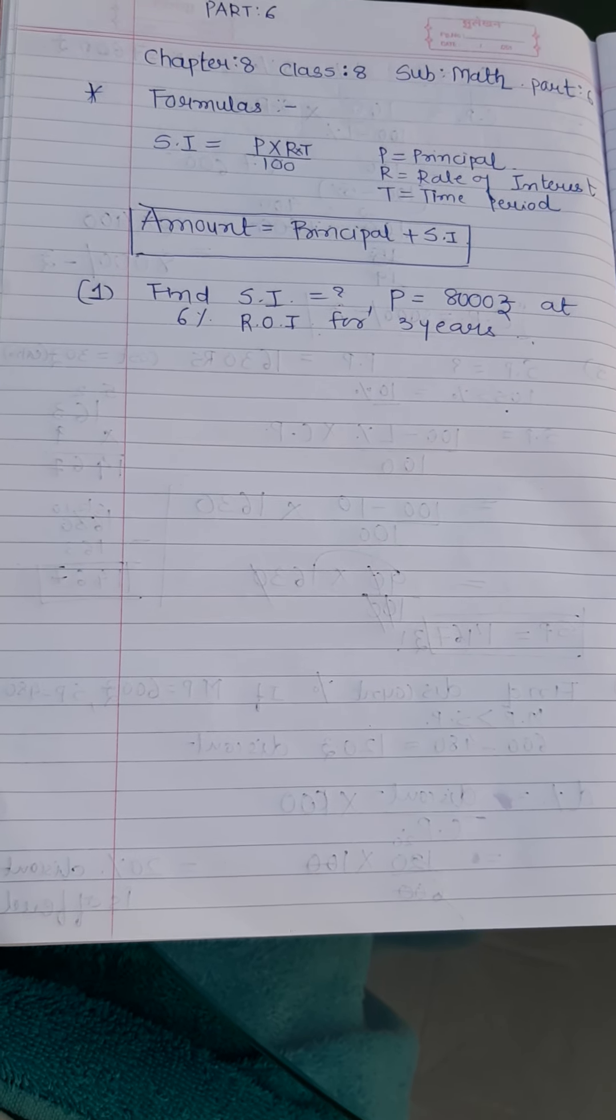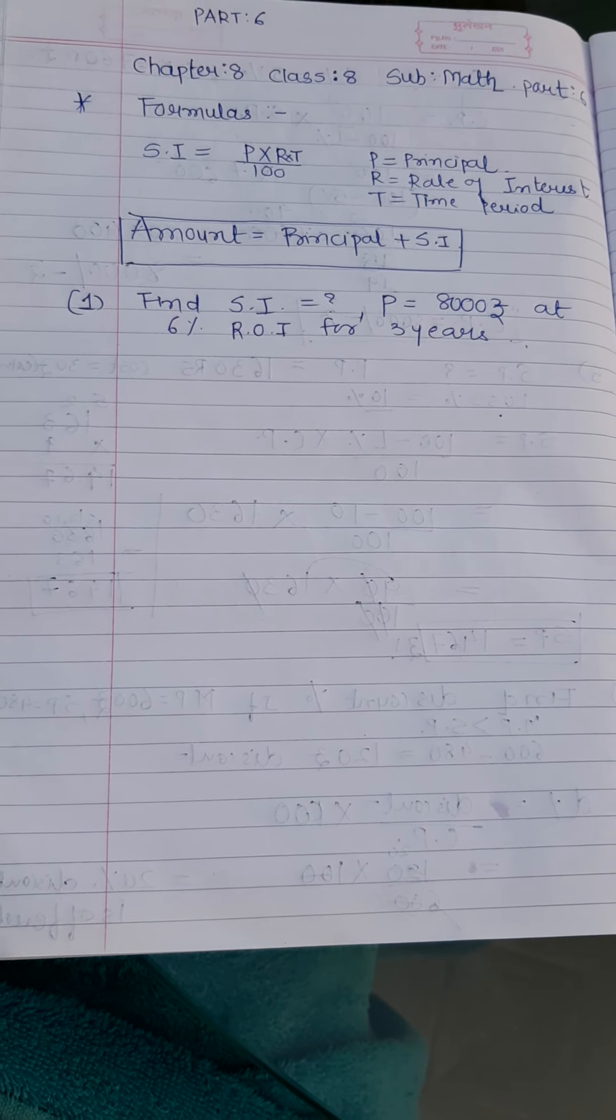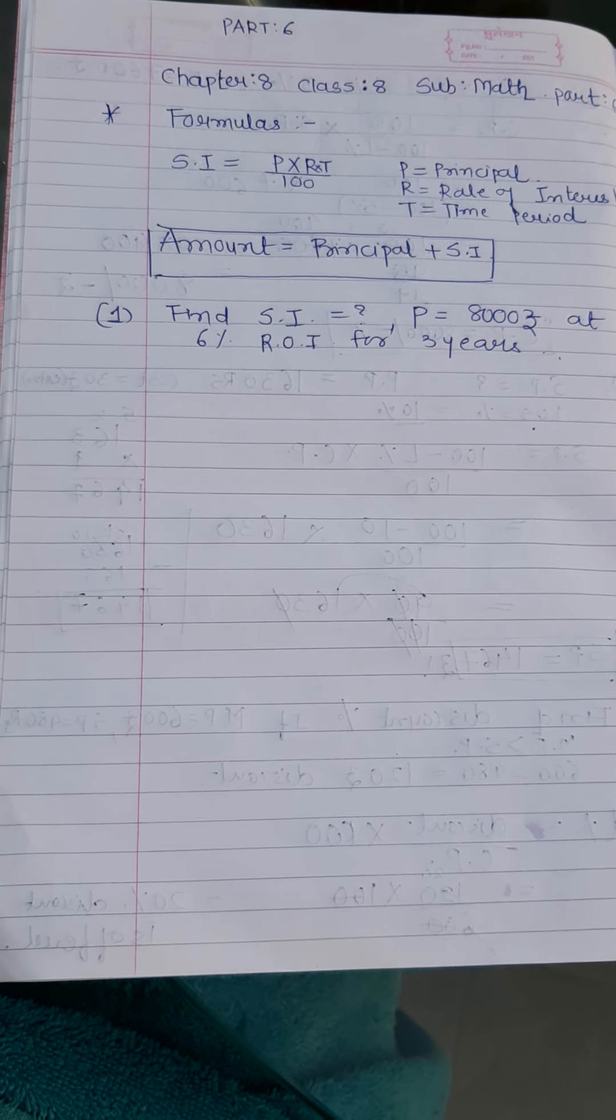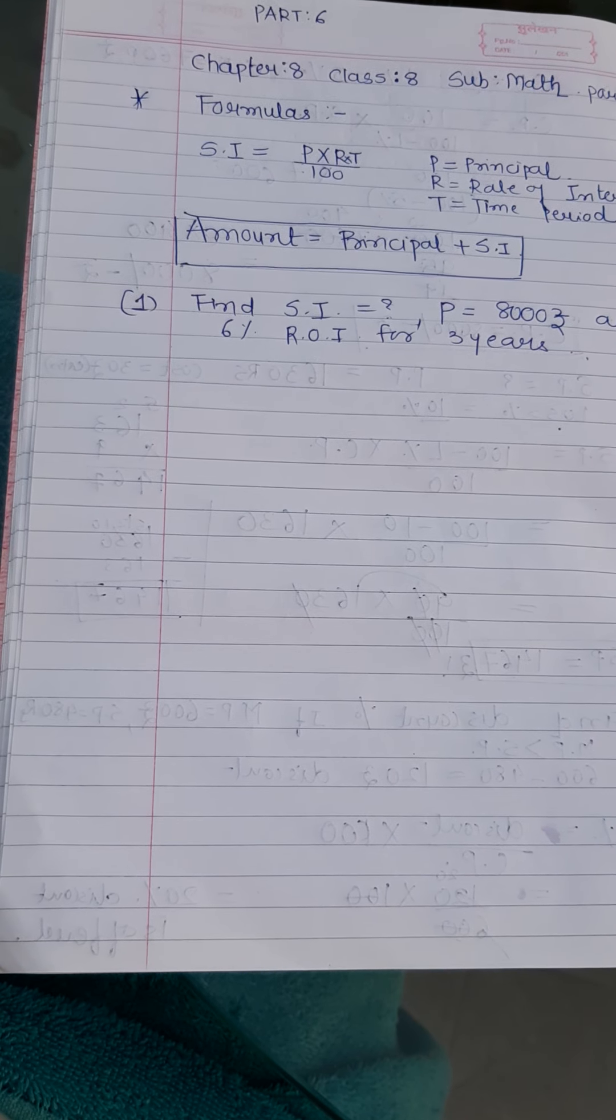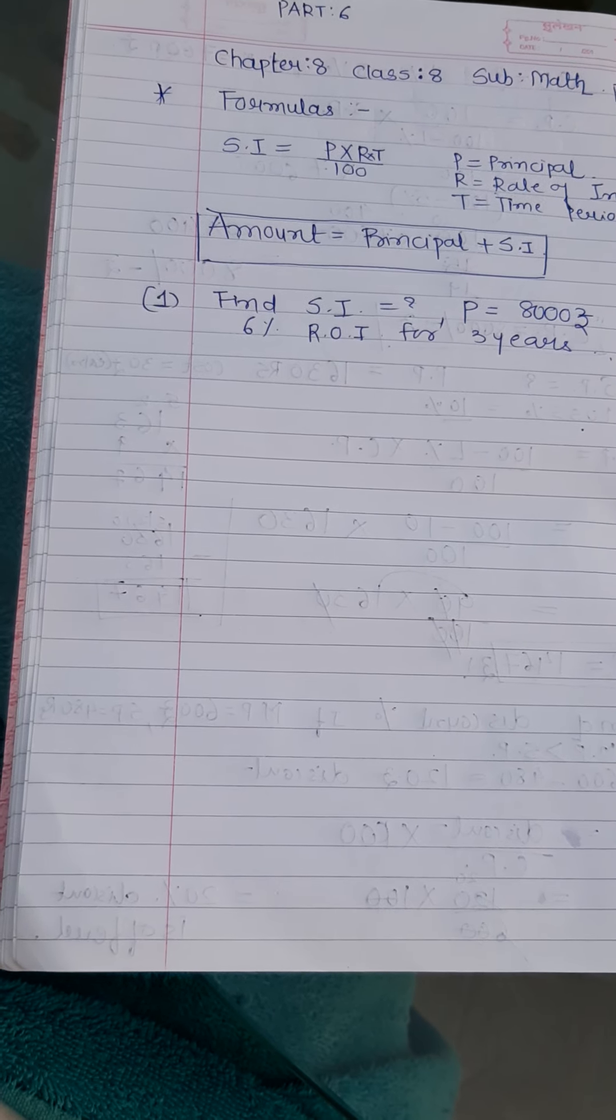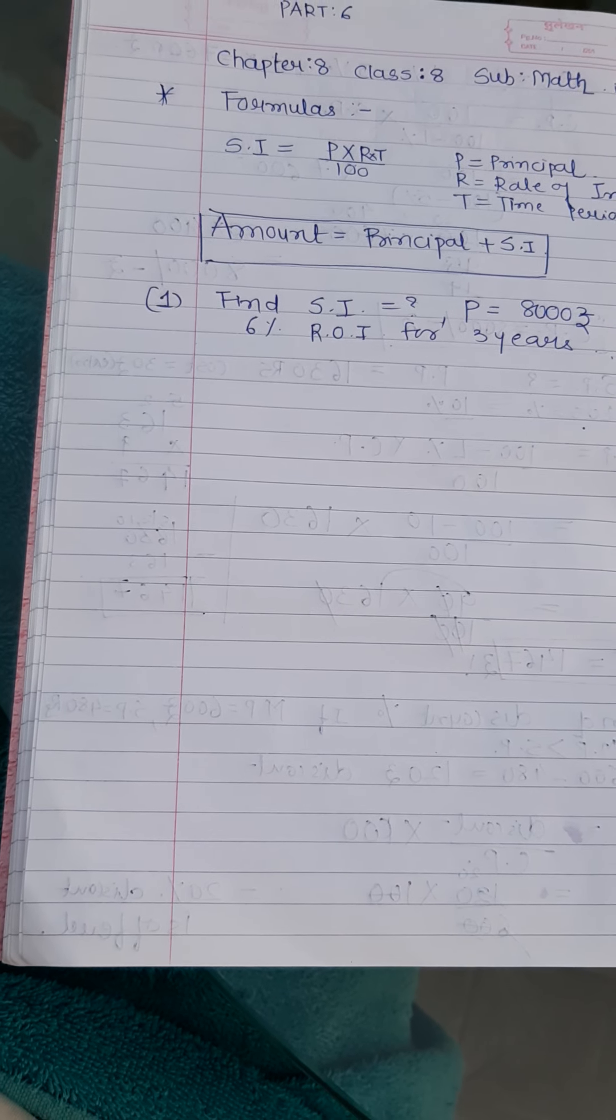You can find the formula of simple interest here that is PRT upon 100. Now when you go to bank, you might have heard the word interest. So simple interest is always counted on the principal. But compound interest is also counted on the principal plus interest.